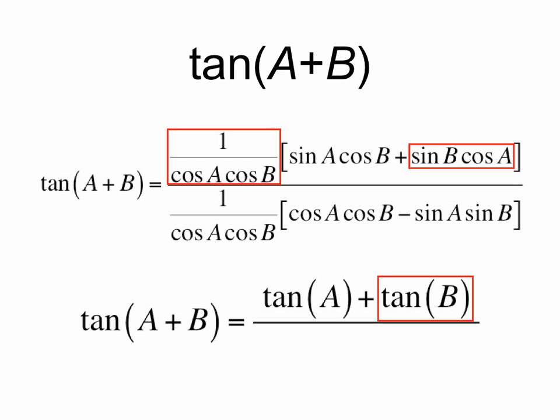If we do the same simplification for our second term, the cosine a terms cancel, and we're left with sine b over cosine b, or tan b.